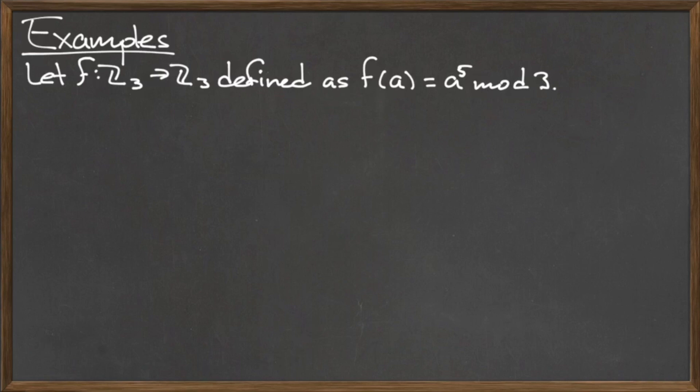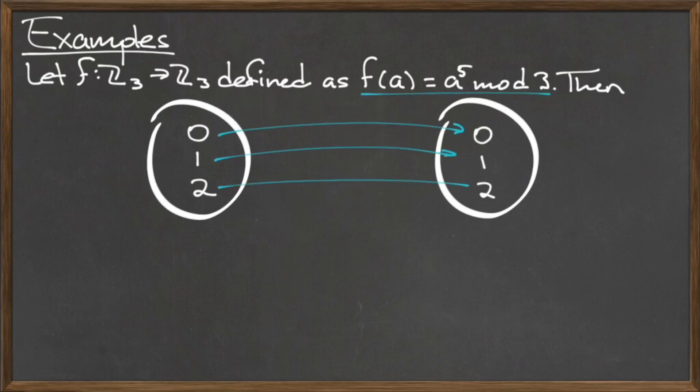we need to compute the image for each element in the domain. The image of 0 is 0, the image of 1 is 1, and the image of 2 is 2 under the function f. So this function f is an identity function on Z3.